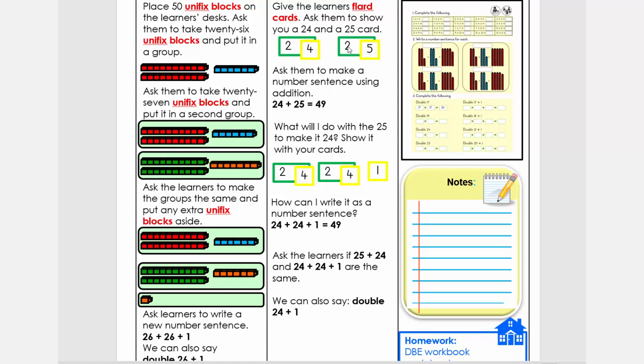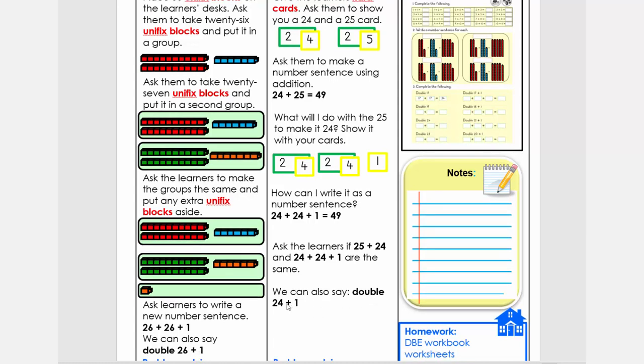Very important is how can I write it as a number sentence? So here we've got 24 plus 25. So we're going to first look at what's the doubles of that. So we're going to say 24 plus 24 or double 24 plus 1. How can I write it? I say 24 plus 24 plus 1. And lastly, how do I write it then? It's double 24 plus 1. So often what we do is we just ask the learner double 24 and later on double 24 plus 1, but we don't let them do the practical work first. It's all to do with the understanding of this word double.